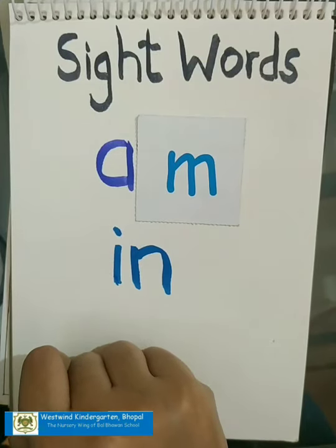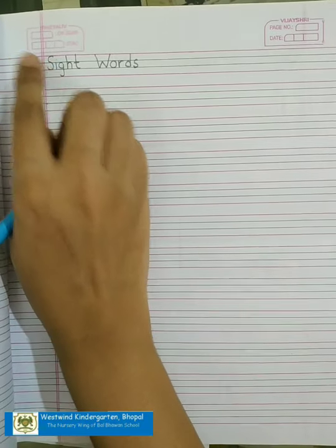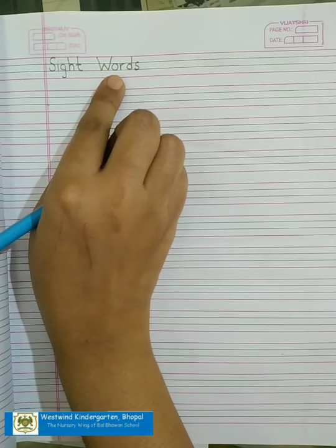Children, I hope you understood how do we combine the phonic sounds of two letters and read them together. Now it's time to write all the sight words that we have learned till now in our English notebook 1. So let us begin. Now open a new page in your English notebook 1. Mention the date over here and write the heading sight words.